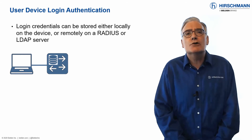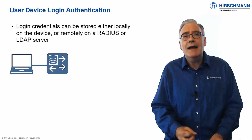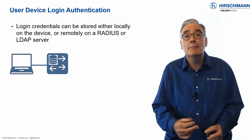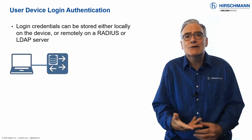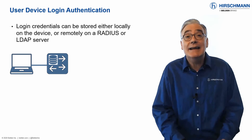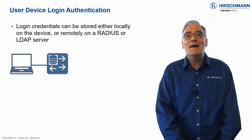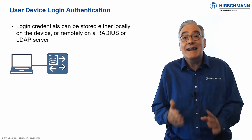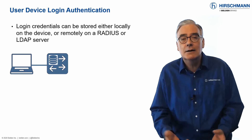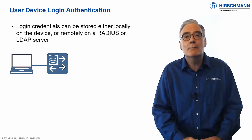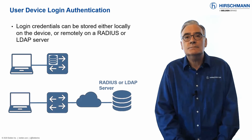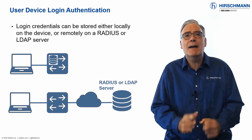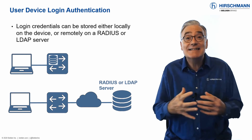When your employees want to log in to your network devices, their credentials must be checked. HiOS offers several ways to authenticate your employees. The simplest way is to store usernames and passwords in a database on each switch, but this has a potential disadvantage. If an employee leaves the company or a new employee joins, the database on each switch must be updated. A second option would be to use RADIUS, a tried and trusted mechanism for storing credentials in a central server.